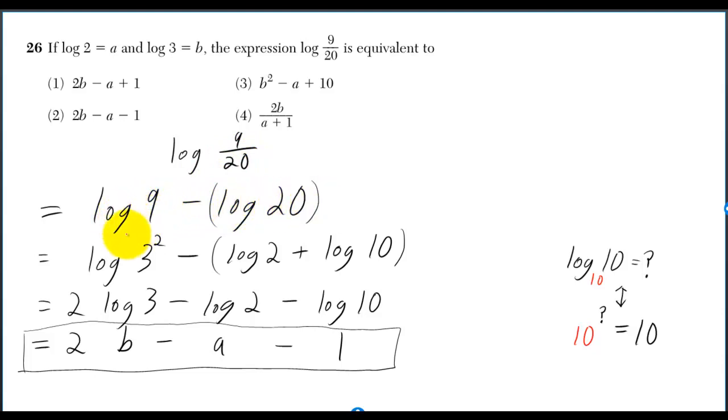Log 9 is equal to log 3 squared because 3 squared equals 9. Then log 3 squared is equal to 2 log 3. You can pull the 2 out front. But remember, they told us log 3 is equal to B, so we'll replace log 3 with B, and we have 2B for that part.